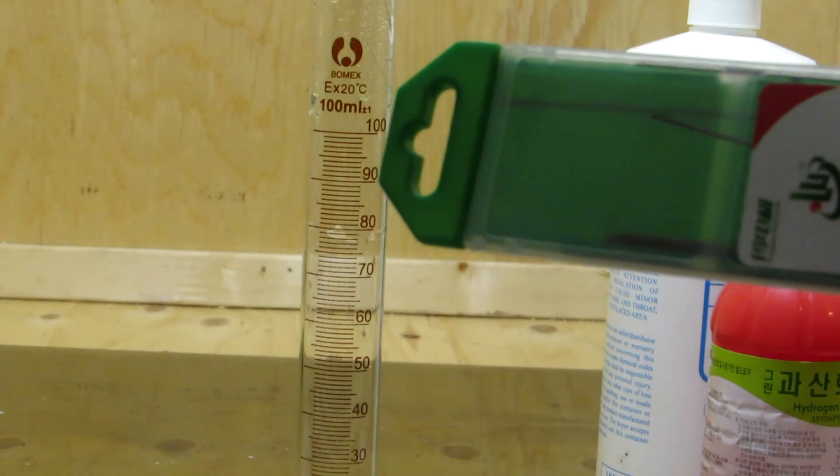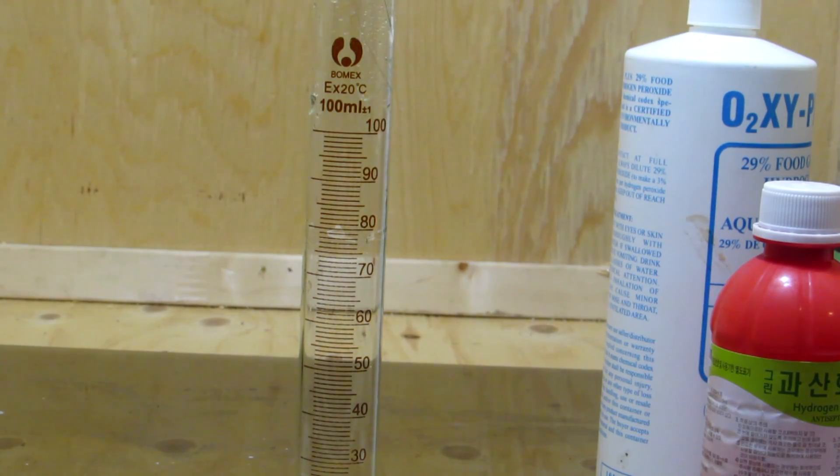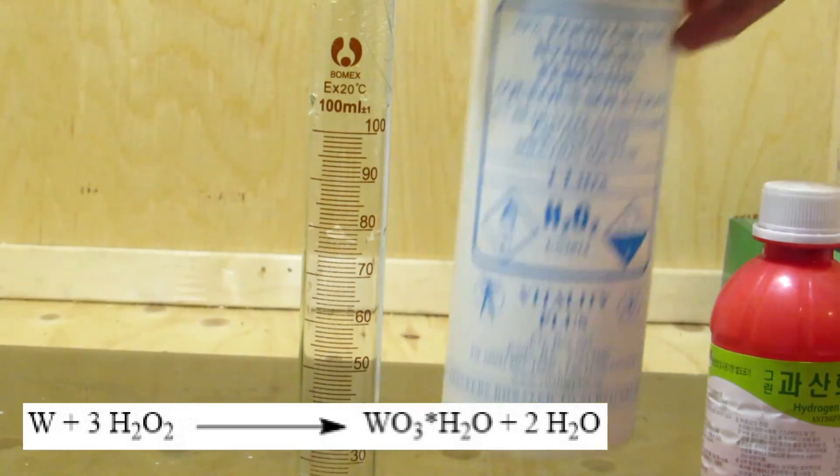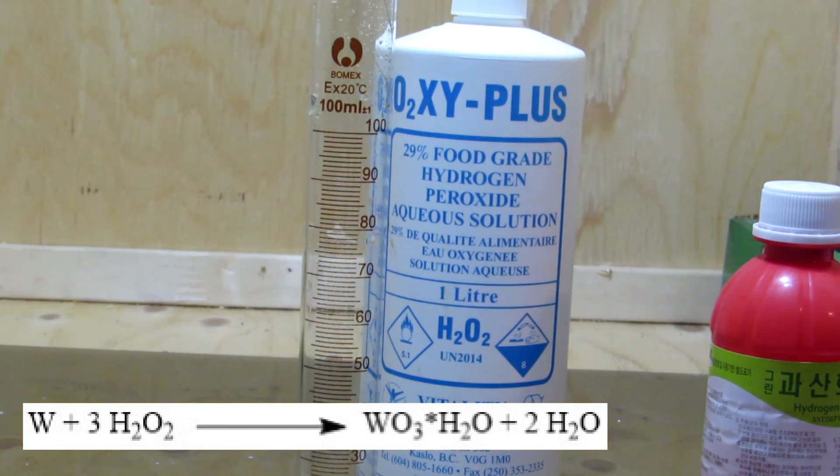These rods contain 98% tungsten and 2% thorium dioxide. Tungsten will dissolve in hydrogen peroxide to form tungstic acid, so the initial thought was to dissolve away the tungsten leaving the thorium dioxide.